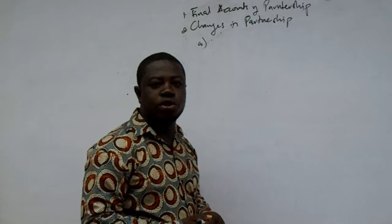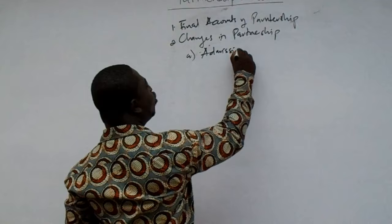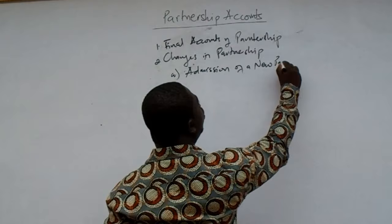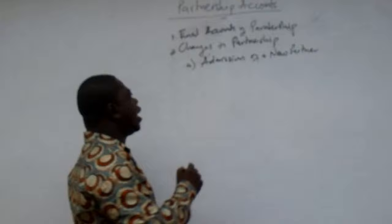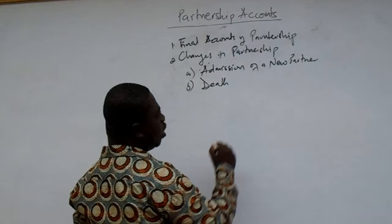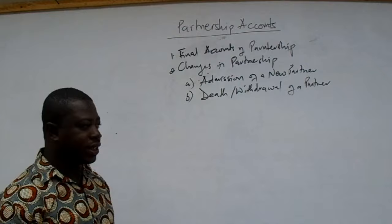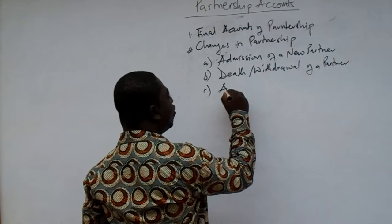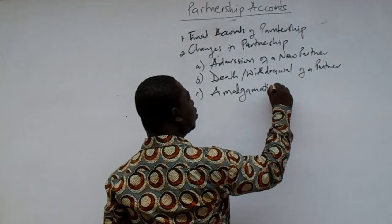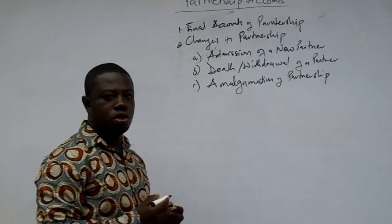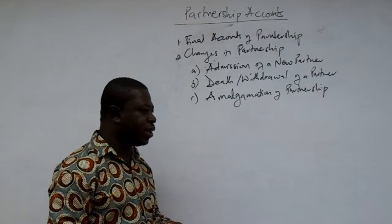With the changes in partnership, we are going to look at the situation where there is an admission of a new partner and the accounting arrangements for that. We are also going to look at the accounting arrangement where there is a death or withdrawal of a partner from the partnership business. And then we are also going to look at another possible situation where there is an amalgamation of partnerships — where two partnerships come together and what the accounting arrangements are for such a circumstance.